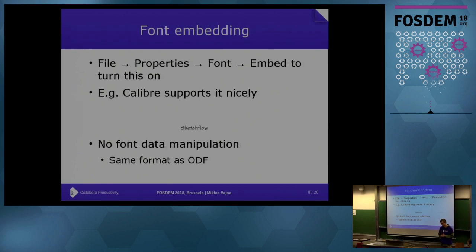Then the next feature is font embedding, which is pretty frequently used for e-books. The nice thing is that for the font binary format, what we have in ODF can be transferred to EPUB as-is, so no manipulation of the font data itself is necessary. Here is a screenshot of a special font that was not available on my system — and that's a screenshot from an EPUB reader.